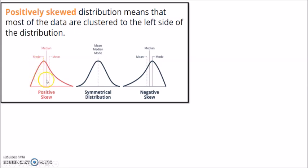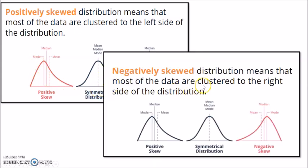When we say negatively skewed, meaning most of the data is clustered to the right. They're on the right side, most of the data. So that's negatively skewed distribution.